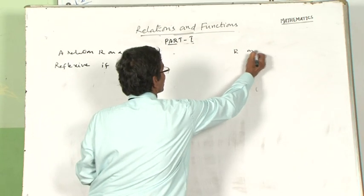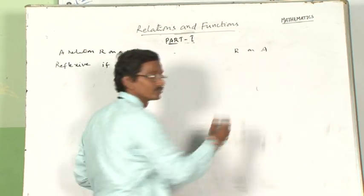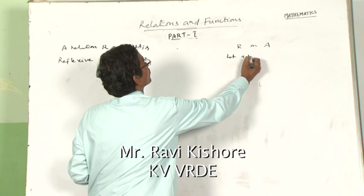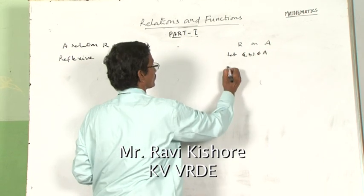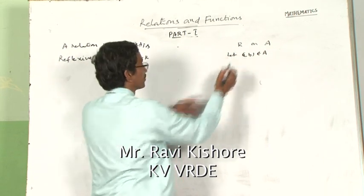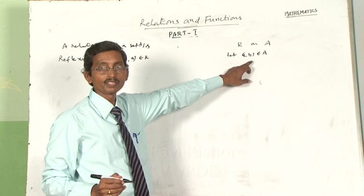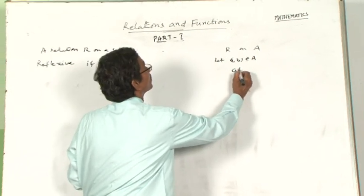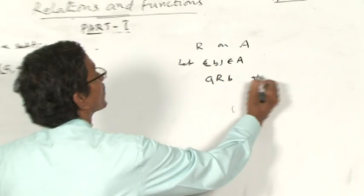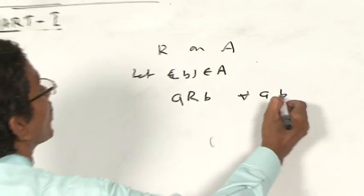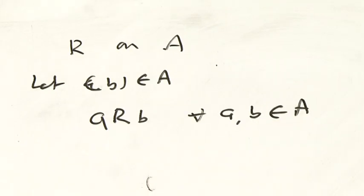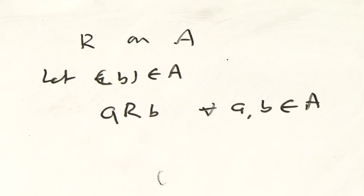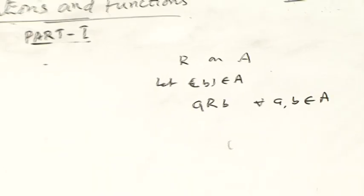R is a relation on a set A. Let A comma B belong to A. If A is related to B, then we write it as A R B, for every A comma B belonging to A. Now, I will discuss the types of relations.